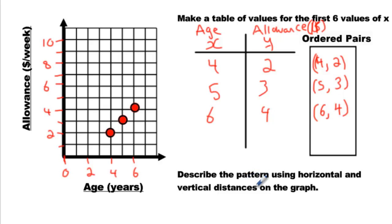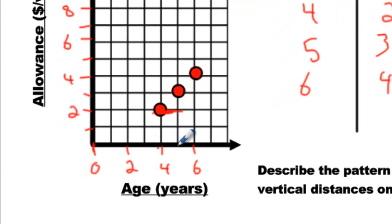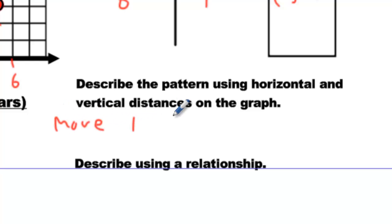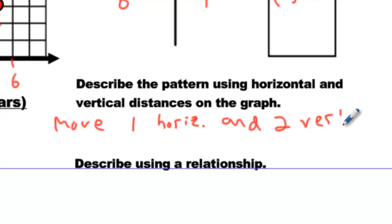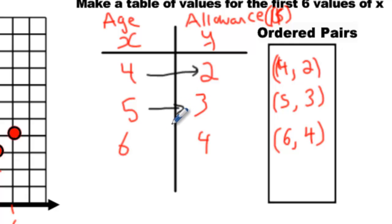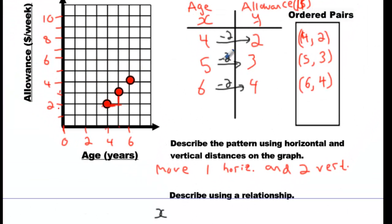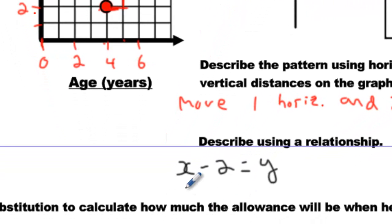Now we've got to describe the pattern using horizontal and vertical distances. We move from this dot to that dot by going one number horizontal — from 4 to 5 — and then one number vertical, from 2 to 3. So: move 1 horizontal and 1 vertical. Now describe using a relationship. We're not multiplying or dividing here — we are subtracting 2 every time. We're taking x and subtracting 2 from it, and when we do that we get y, which is his allowance. So x - 2 = y. That's our expression.